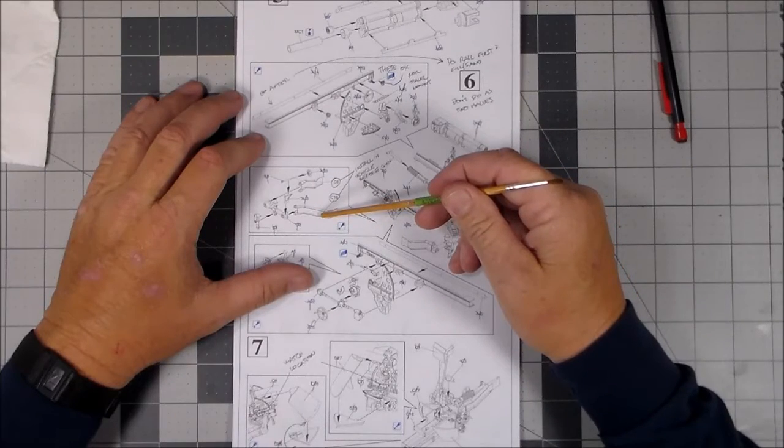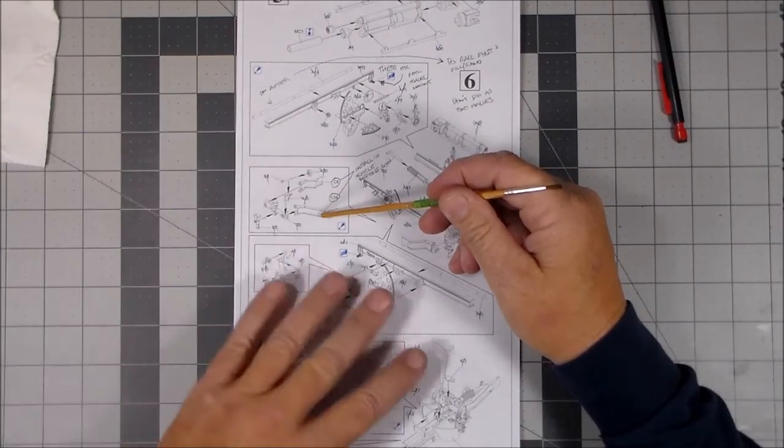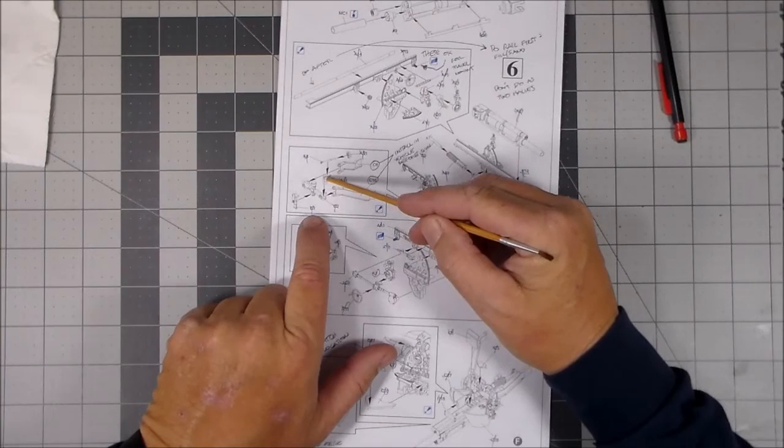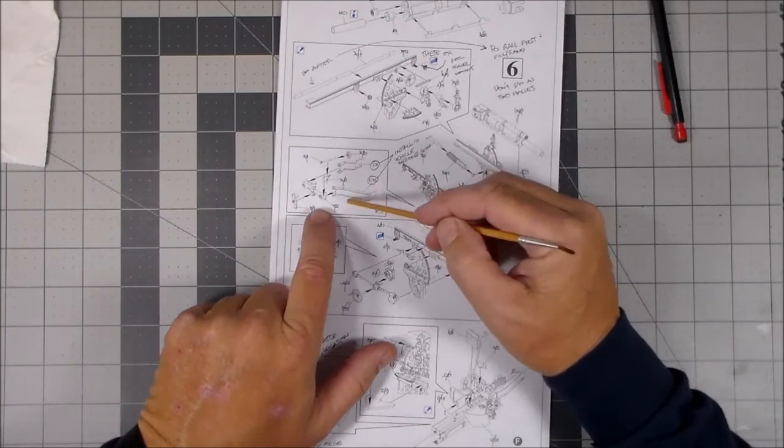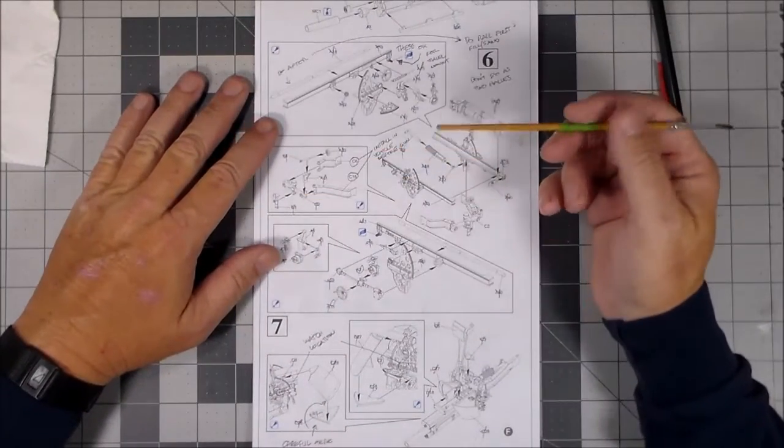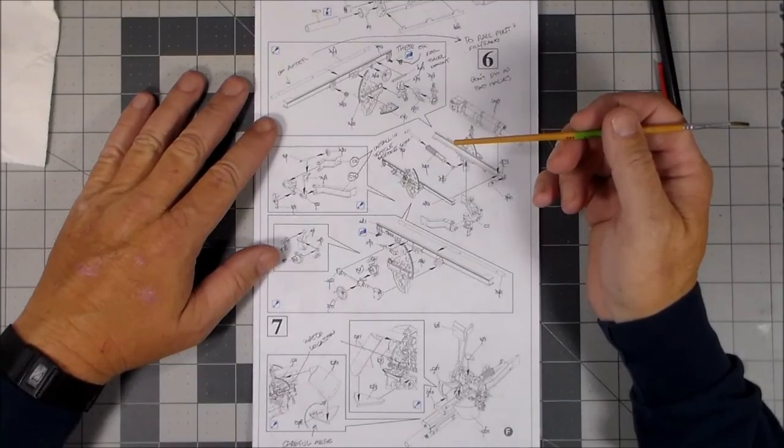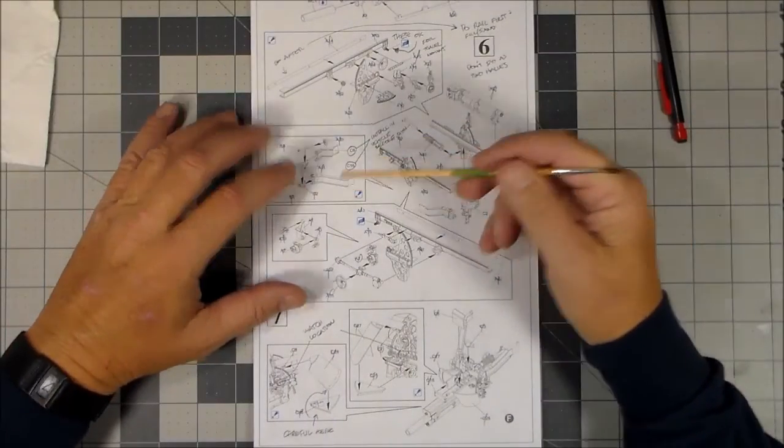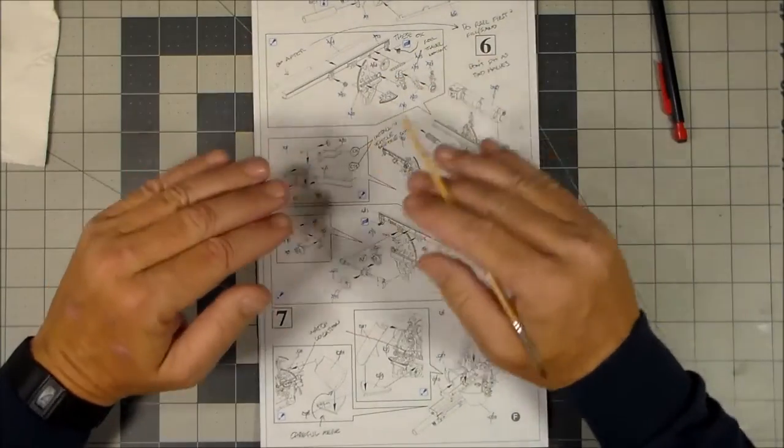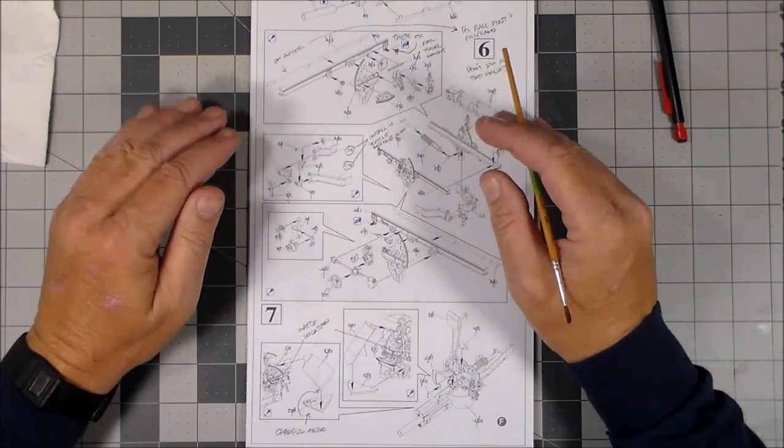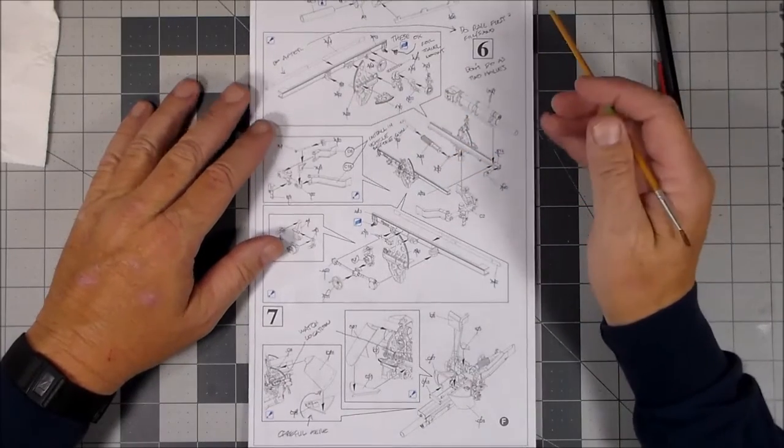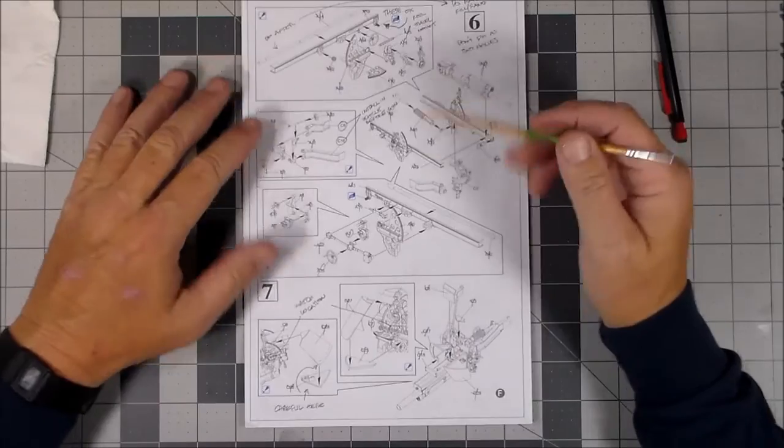I glued those onto the vehicle first. I did not assemble C2, C1, A11, and A33 onto those parts as it shows in the instructions. So you build those parts and you'll do those later. But I went ahead and installed them right in the vehicle because there's a spot right here and here that need to be filled and sanded. But everything else, just install it as it shows.